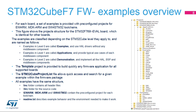For each board, a set of examples is provided with pre-configured projects for EWARM, MDK-ARM, and SW4STM32 toolchains. The right side figure shows the project structure for the STM32F769I EVAL board, which is identical for all other boards. Examples are classified depending on the STM32Cube level they apply to: Level 0 examples use HAL drivers without any middleware component; Level 1 examples, called applications, provide typical use cases of each middleware component; and Level 2 examples, called demonstrations, implement all HAL, BSP, and middleware components. A template project is provided to quickly build any firmware application for all supported boards.